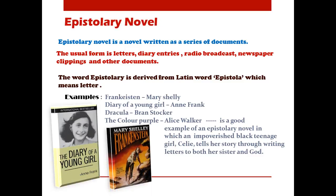The epistolary form of novel is written as a series of documents — in the form of diaries, letters, radio broadcasts, newspaper clippings, or other documents. The word 'epistolary' is derived from 'epistola,' which means letters. Examples include Diary of a Young Girl by Anne Frank, Dracula, and The Color Purple by Alice Walker, in which an impoverished Black teenage girl named Celie tells the story through letters to her sister and to God.